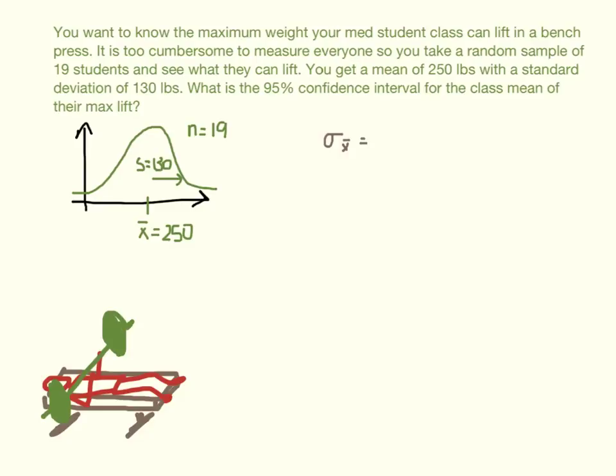And so we need an estimate for our standard error. And our estimate for this, we said we would use the estimated standard error, which is the standard deviation over the square root of the sample size. And so in this case, we know the standard deviation is 130 pounds, and we know the sample size, and that is 19.